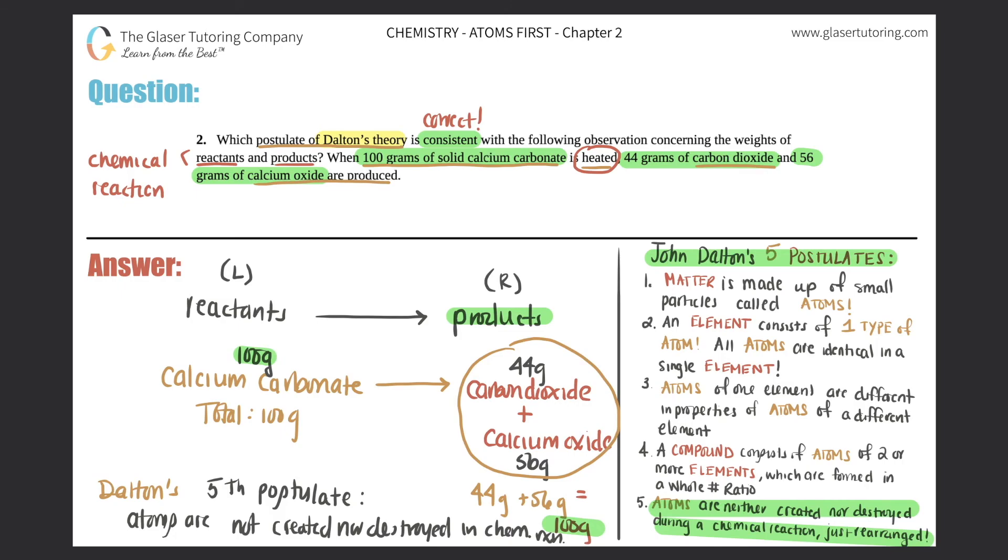Okay, but you guys can write out the full postulate, but that's all that it is. Which postulate was consistent? It was Dalton's fifth postulate, the one that says atoms cannot be created nor destroyed. The amount of reactants have to equal the amount of products in atoms.